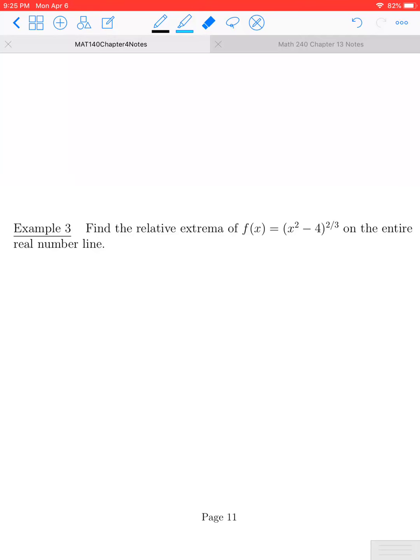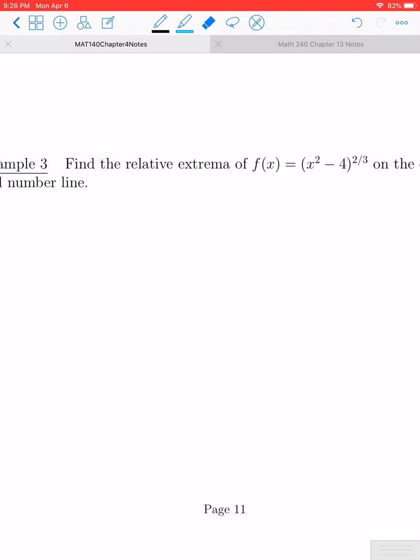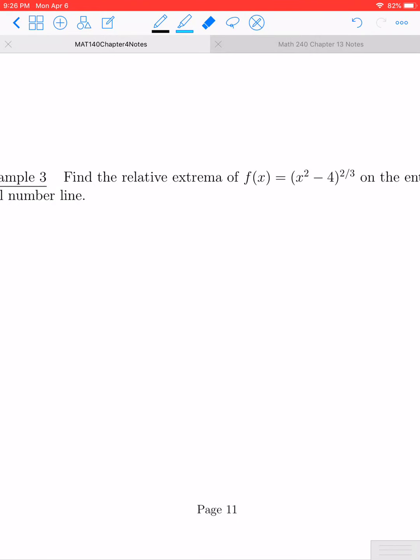Let's use the first derivative test to find the relative extrema of the function f(x) = (x² - 4)^(2/3) on the real number line. The first thing we want to do is begin by finding our critical numbers, so we need the derivative.